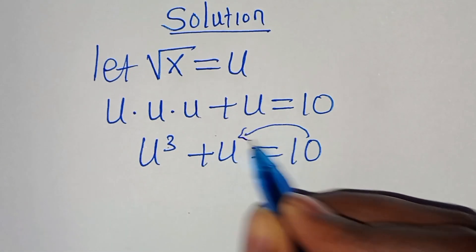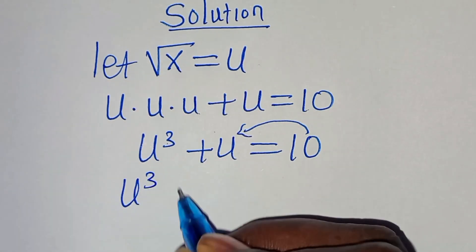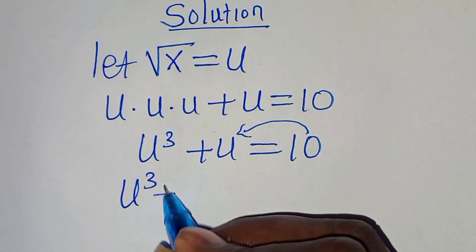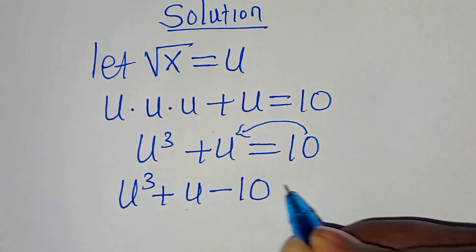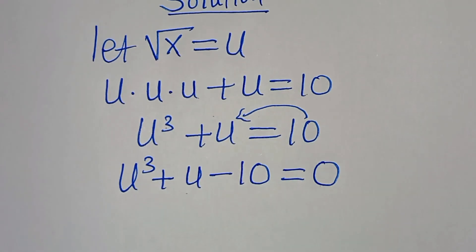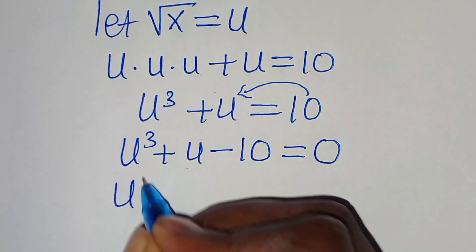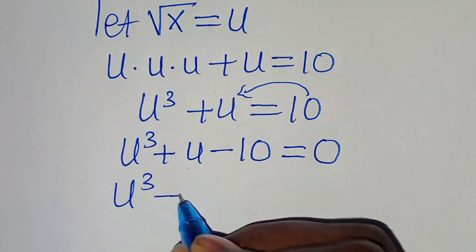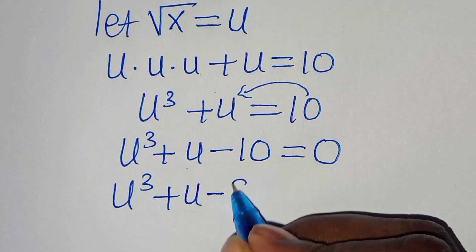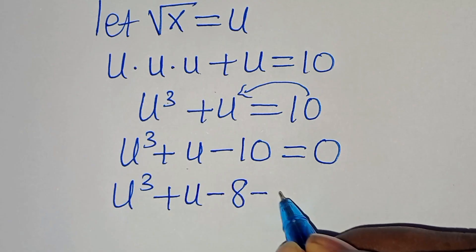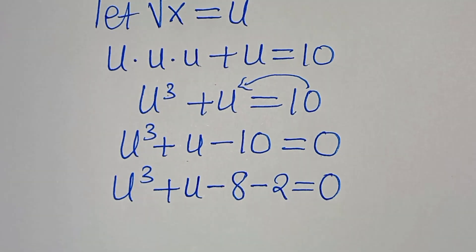Let's take 10 on the left-hand side so that we have u to the power of 3, plus u, minus 10, this is equal to 0. Now we have u to the power of 3 plus u minus 10, which is minus 8, minus 2, this is equal to 0.